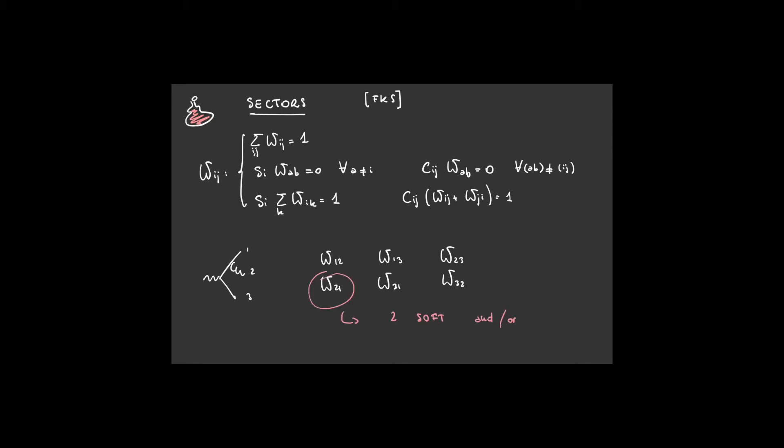Then, we partition the radiative phase space following the FKS scheme. We introduce sector functions W_IJ, where I and J run over the final state partons. These functions have the following properties. The sum over all the sectors is 1, they select the minimum number of singular configurations in each sector, and the sectors sharing the same configurations sum to 1. In this example, the sector W_I includes only the configuration where parton 2 is soft or and is collinear to parton 1.